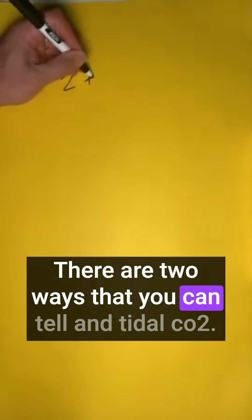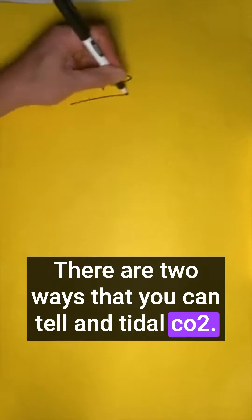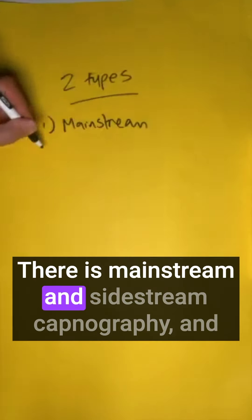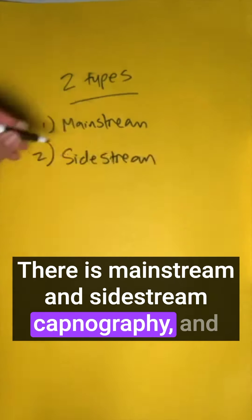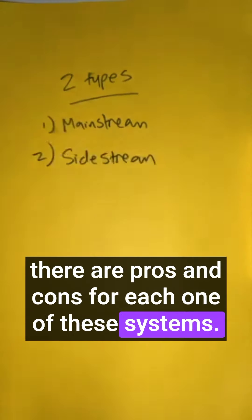There are two ways to measure end-tidal CO2: mainstream and sidestream capnography, and there are pros and cons for each system.